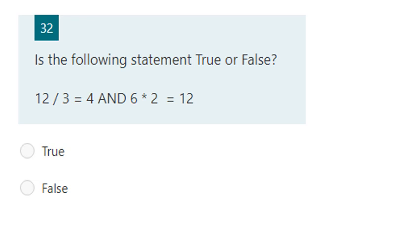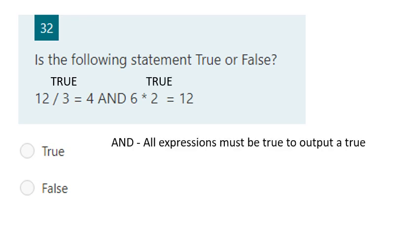Here we've got two expressions joined with an AND. We'll work out each expression and then think about the rule for AND. The first expression says two divided by three is less than four — we know that's true. The next expression is six times two equals twelve — we know that's true. Remembering the rule for AND: all expressions must be true to output true, so the answer is true.